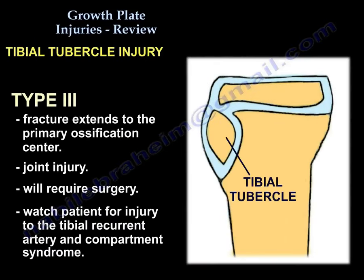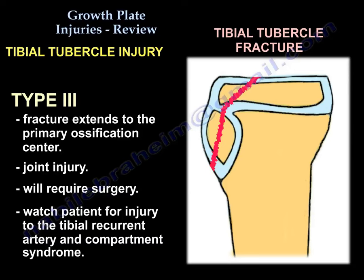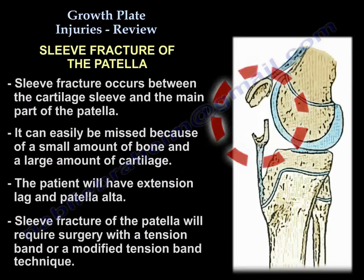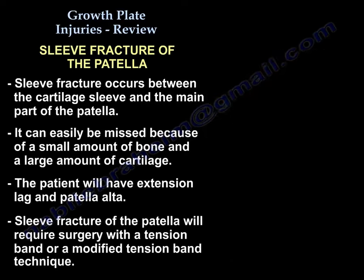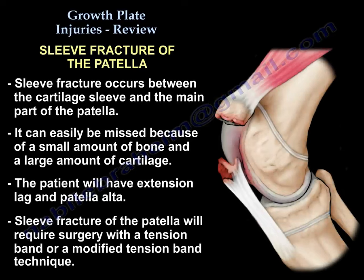Tibial tubercle fractures have several types, but Type 3 extends into the proximal tibial growth plate. Tibial tubercle injuries may be associated with compartment syndrome due to injury of the anterior tibial recurrent artery. When displaced, the fracture involves the joint and likely needs surgical reduction and fixation. Sleeve fracture of the patella occurs between the cartilage sleeve and the main patella; it can easily be missed due to a small bony fragment and large cartilage component. It requires surgery with a tension band or modified tension band technique. Note: sleeve fracture of the clavicle does not need surgery.